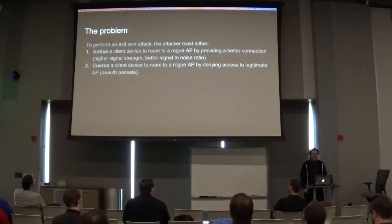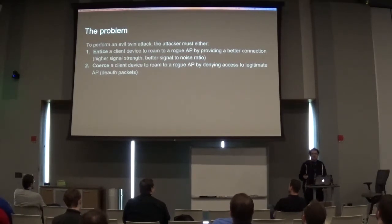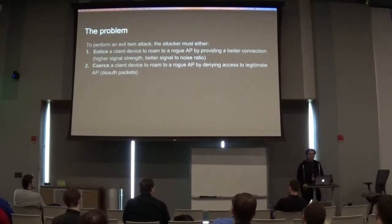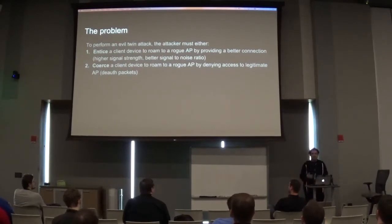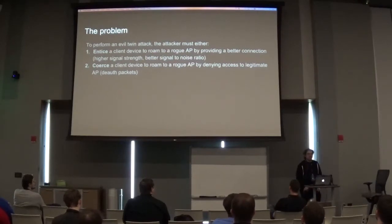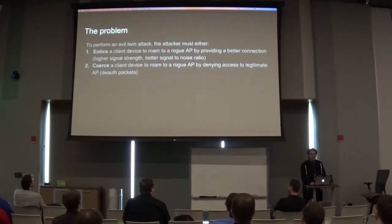With coercion, the clients are connected to an access point and you start spamming deauth packets at that access point. The clients can no longer connect to it, so they start looking for a different access point on the same network to connect to. They connect to yours, because you're there waiting with open arms. You end up with a man-in-the-middle situation.